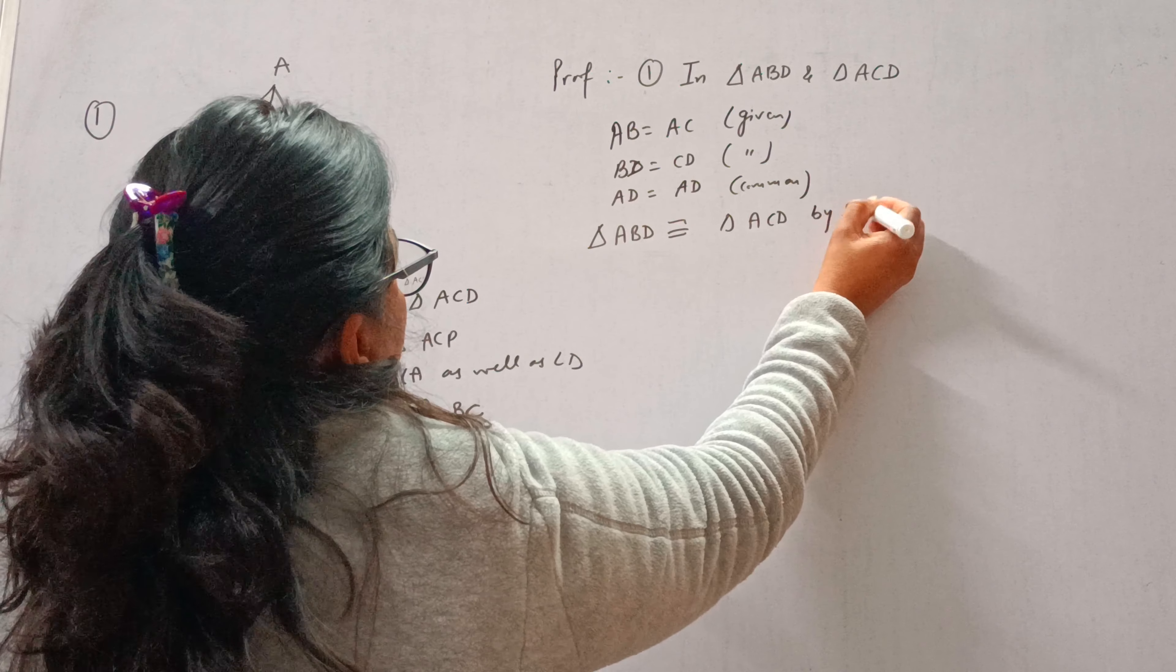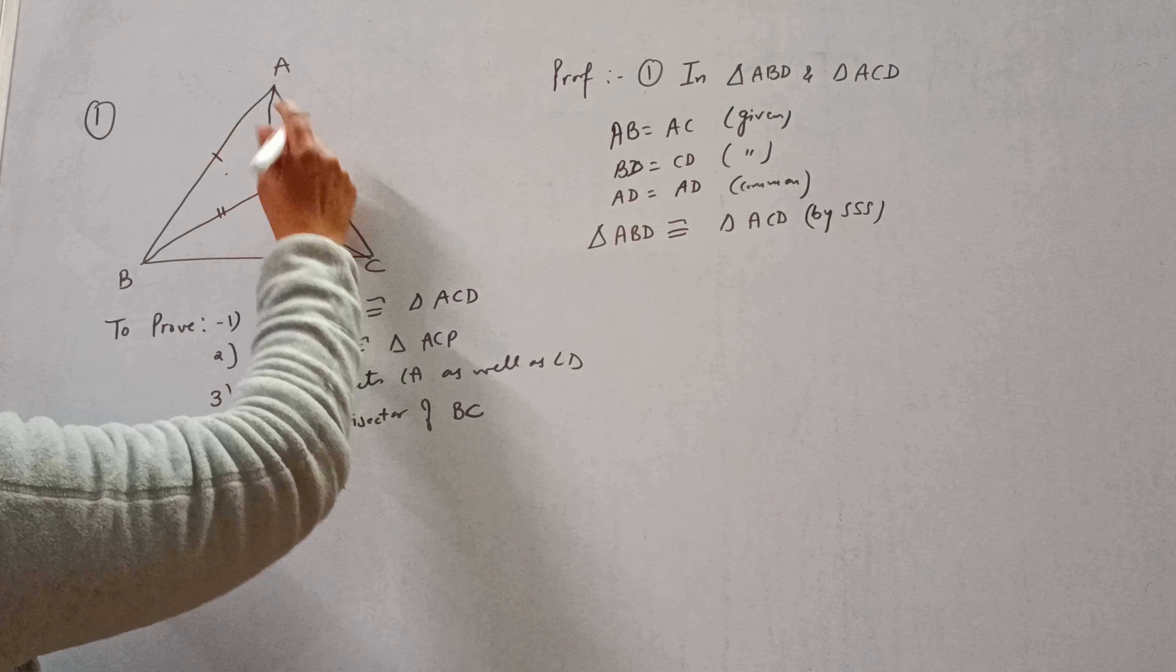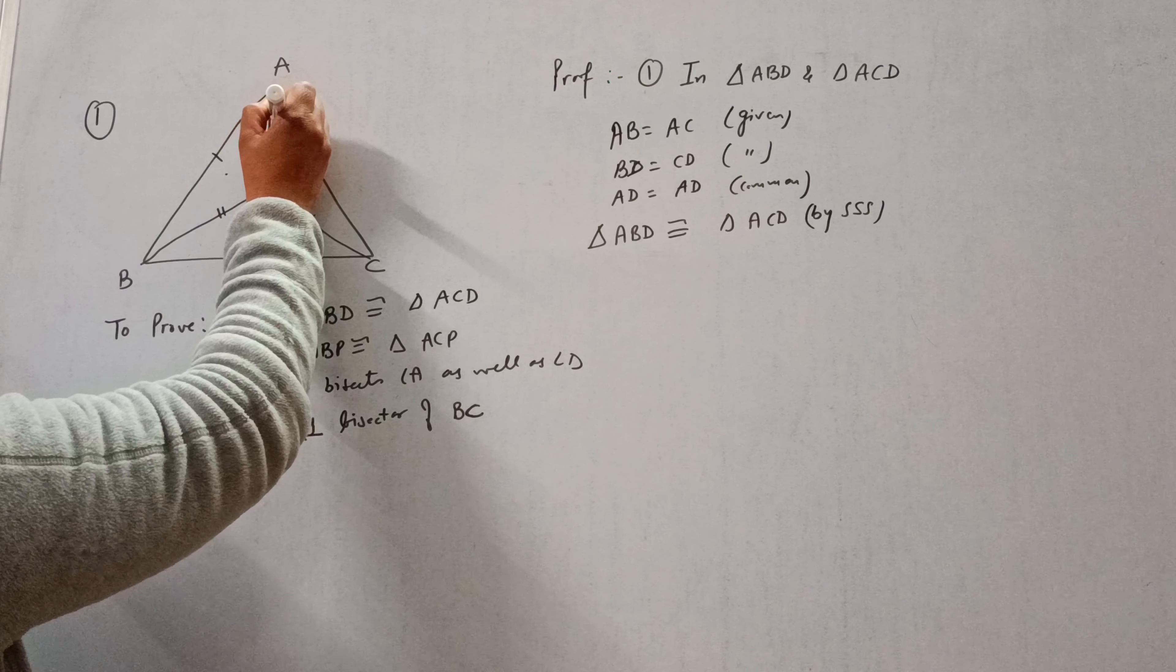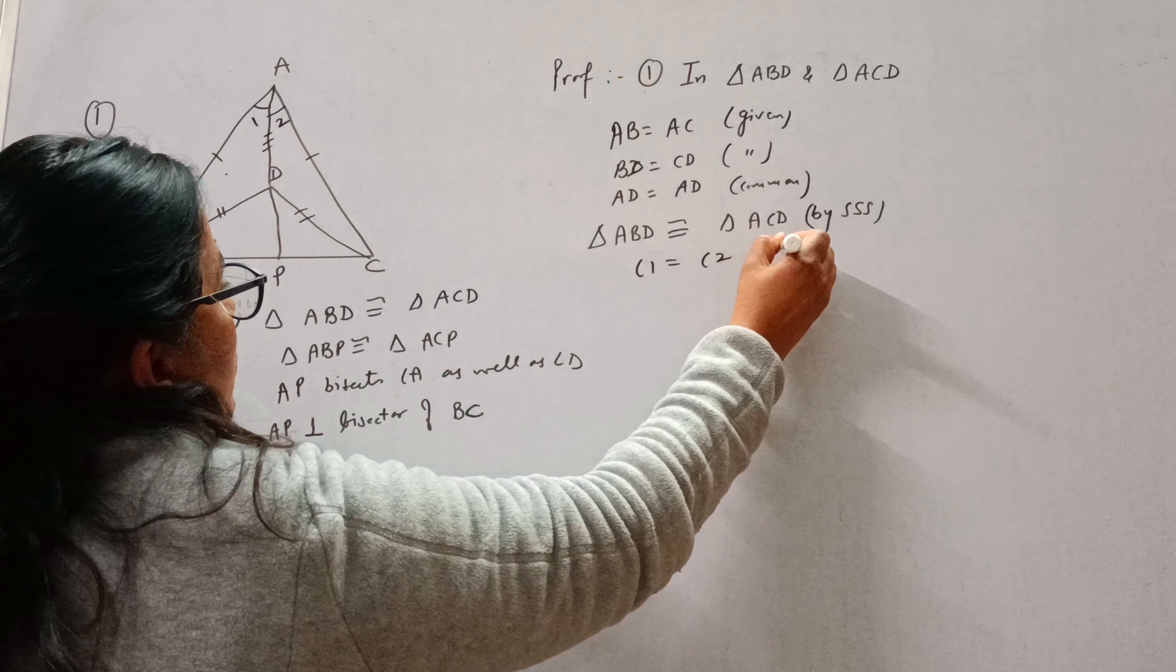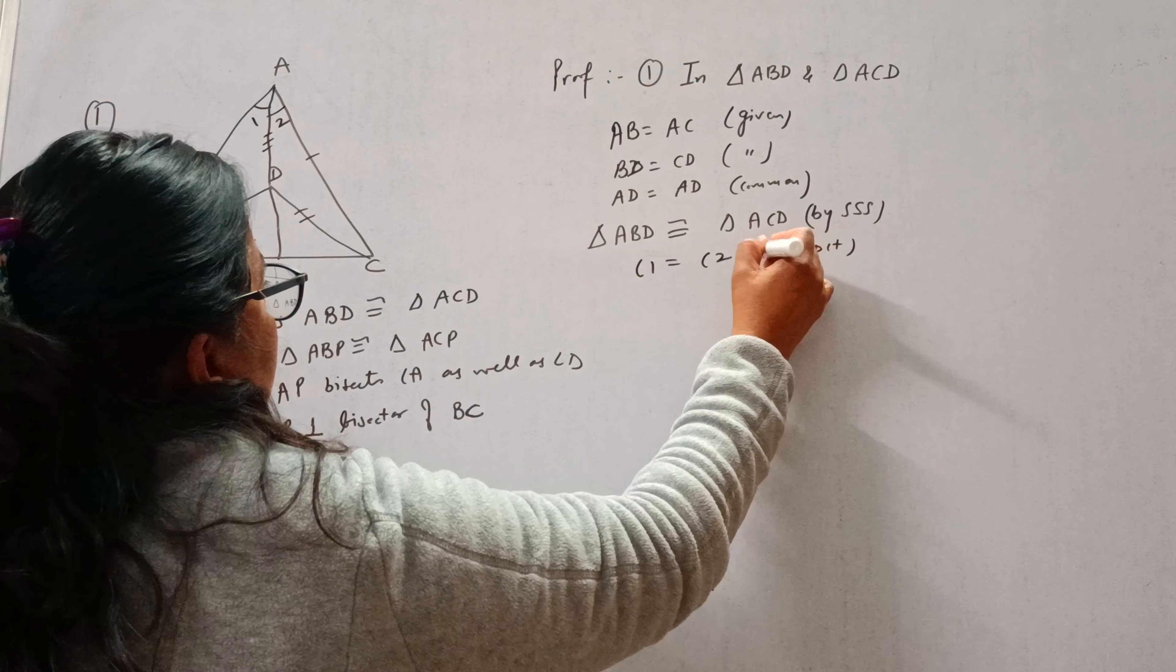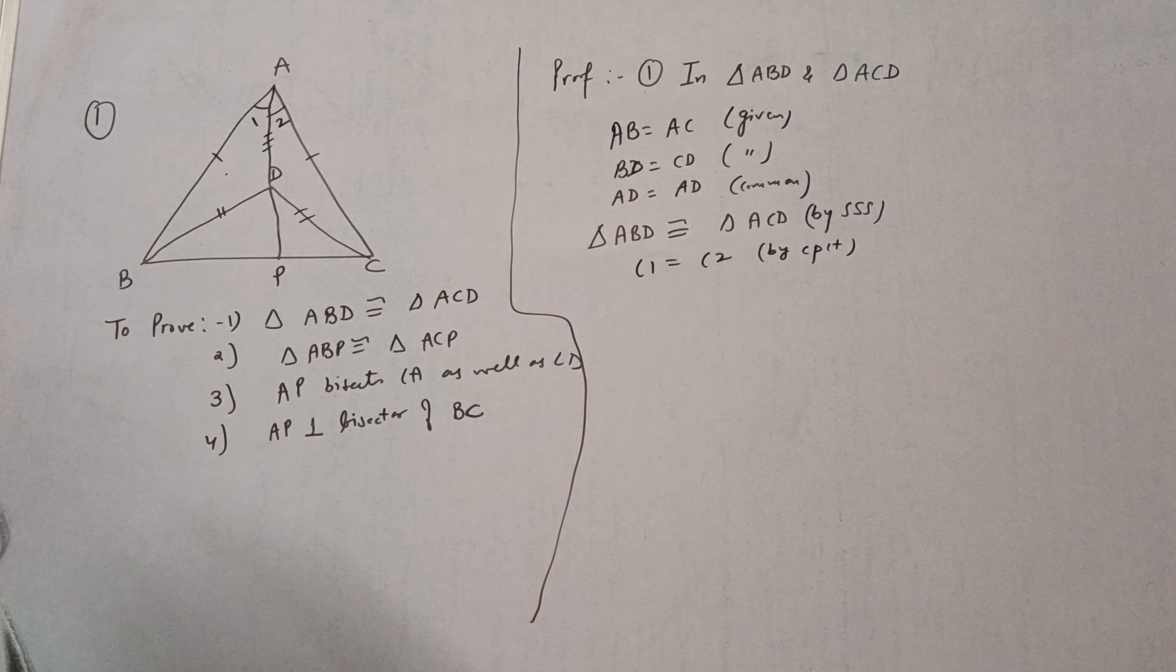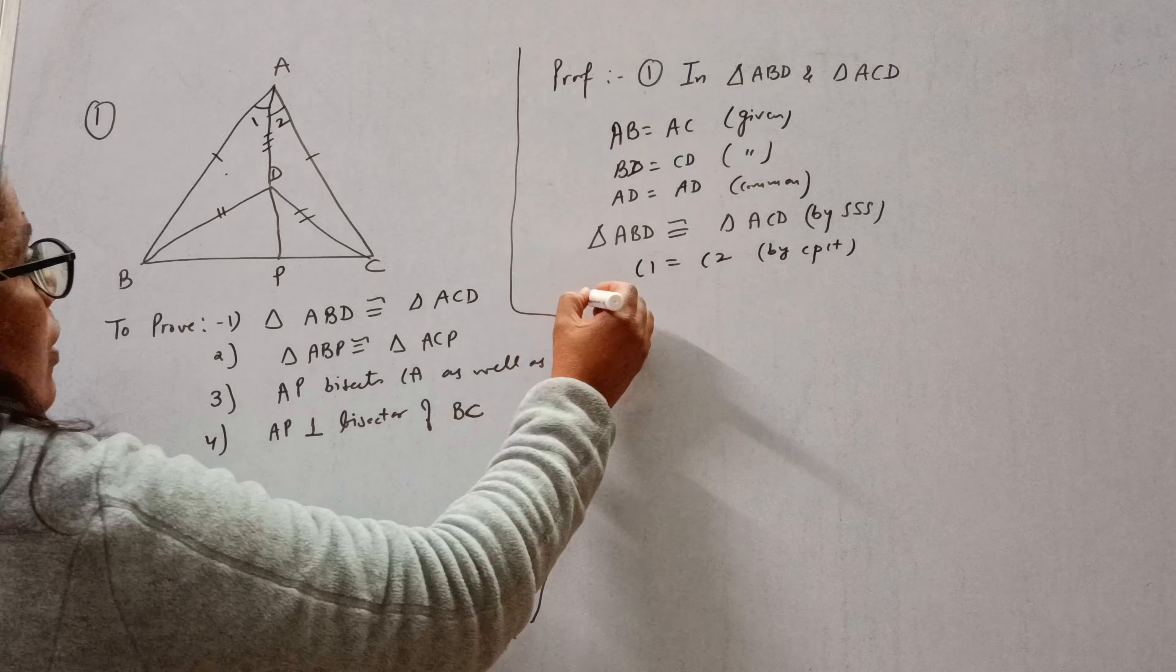By SSS. And we know if the two triangles are congruent, then their corresponding angles are also equal. So angle 1 equal to angle 2 by CPCT. This is part 1.